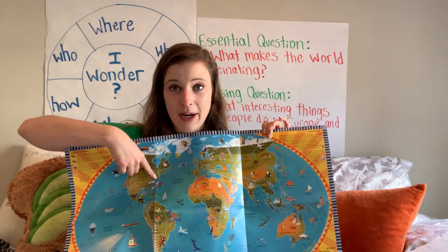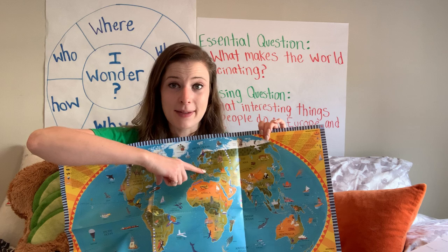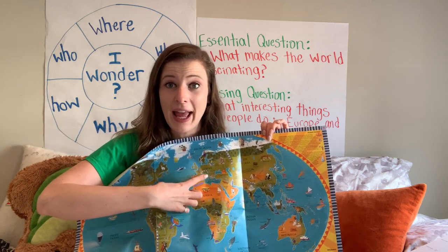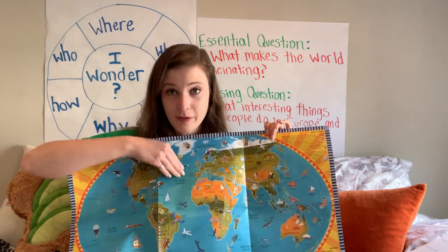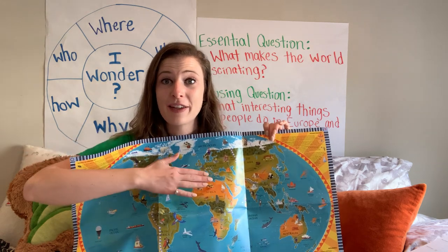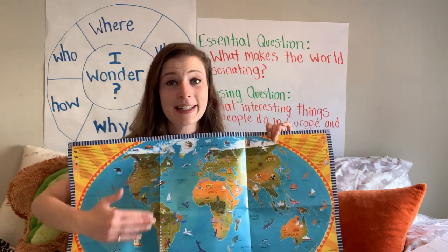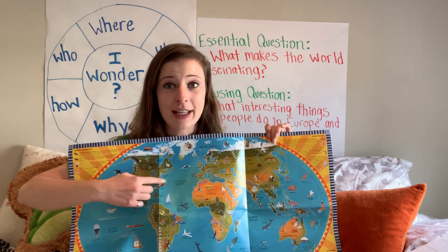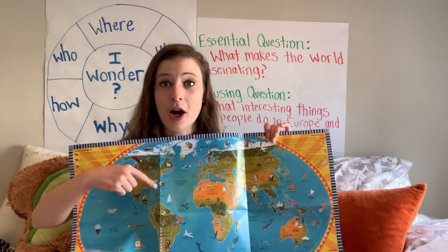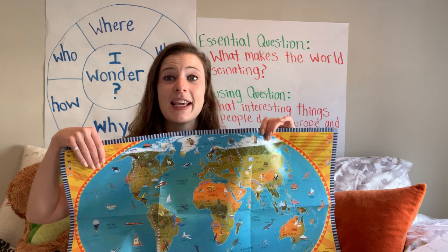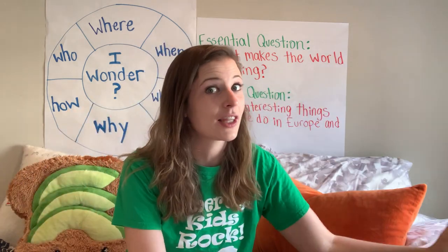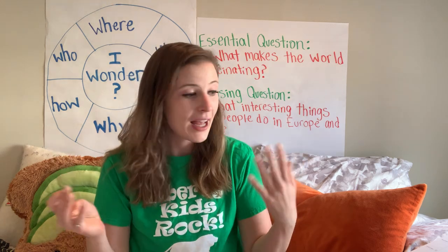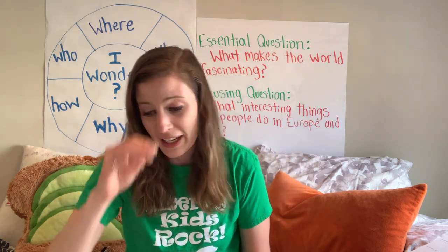We're right here in North America, and even though on this map it looks like we're not very far away, there's a lot of blue in between where we live and Europe, and that blue is the Atlantic Ocean. So even though it looks like a short distance, like we could just walk on over there, we would have to take a long plane ride or an even longer boat ride because we have to cross the Atlantic Ocean.